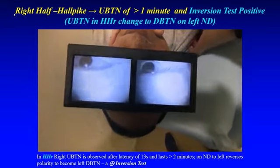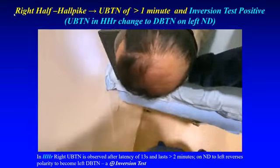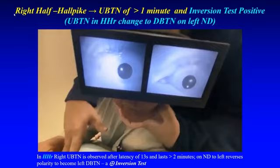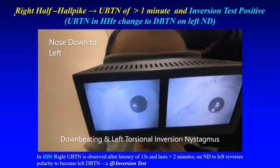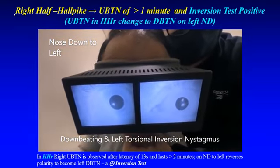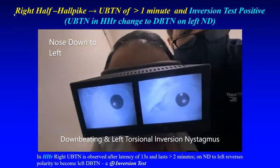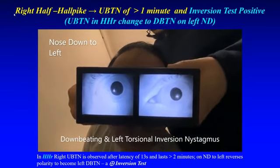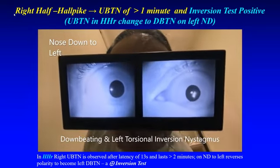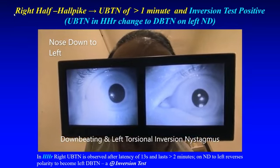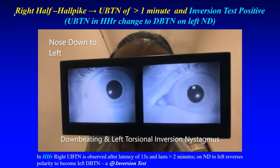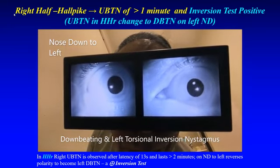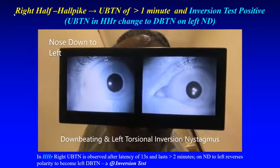Left lateral recumbent position with nose down is then carried out — this is called the inversion test — and the oculomotor patterns reverse polarity. The upbeating right torsional nystagmus during the half-Alpike position has become downbeating and left torsional. The left torsional component is more prominently seen in the right eye of the patient. This is a positive inversion test, an acid test of adherent type of cupulolithiasis.